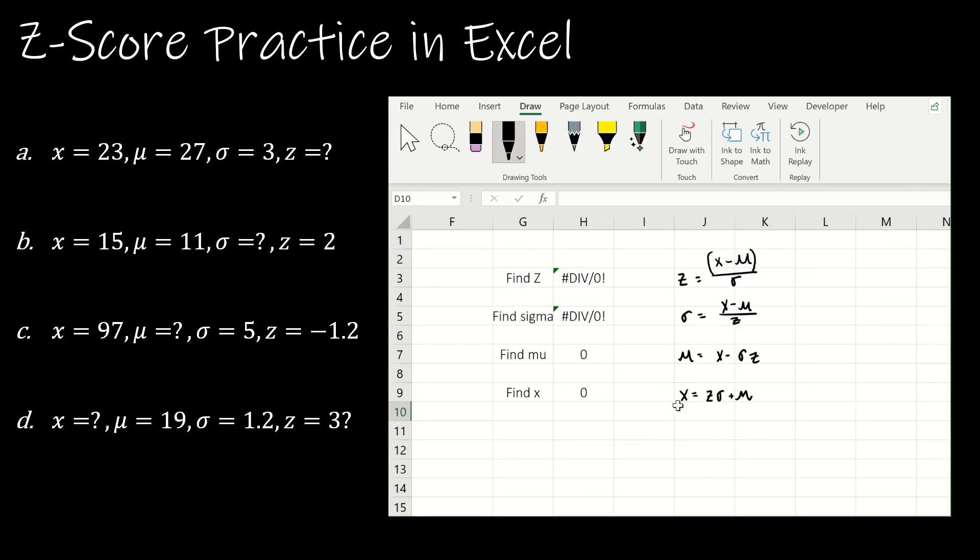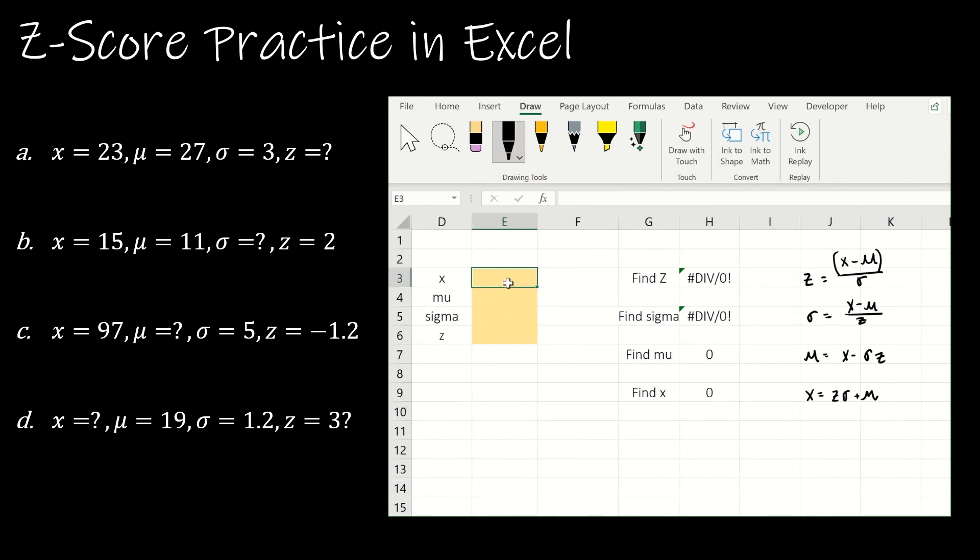So essentially what I'm doing is I'm trying to create a spreadsheet that's going to work for me so that I don't have to work so hard. And I strongly encourage you to do this as well. So here's my equations. And what I've done is I've taken those equations, I've created some input boxes here for x, for μ, for sigma, and for z. What I'm going to do is I'm going to enter the three of the four that I'm given in the question, and then Excel is going to do the work. So I took this z-score formula, which says take x minus μ over standard deviation. So x is e3 minus e4 divided by e5. That's all I've done here. And again, to find sigma, I've inputted the correct formula to find μ and to find x.